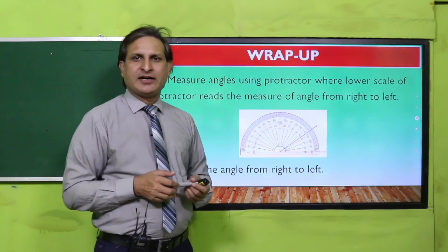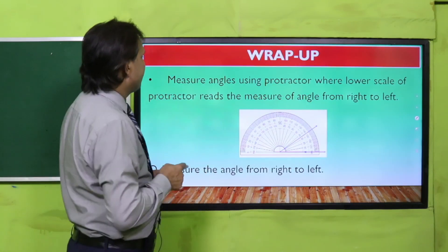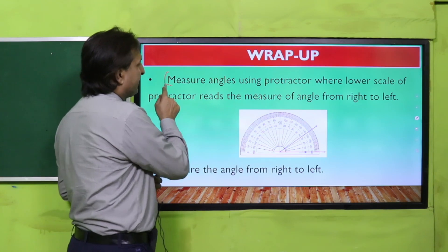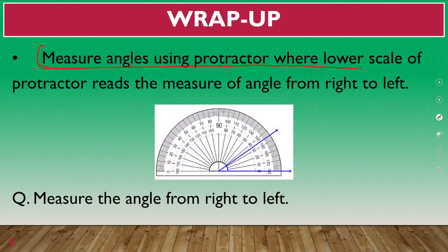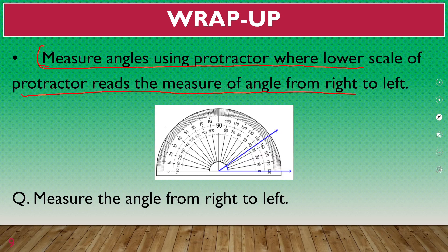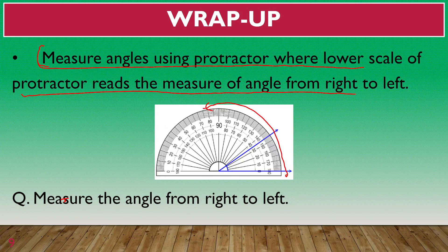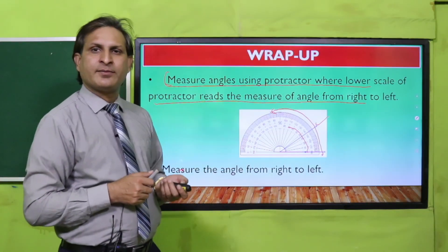Let's recap today's SLO: measure angles using a protractor, where the lower scale of the protractor reads the measure of the angle from right to left. Right to left means you start reading from this side — anti-clockwise — and look at the lower scale. The value on this scale is 35. In this way you measure different angles.